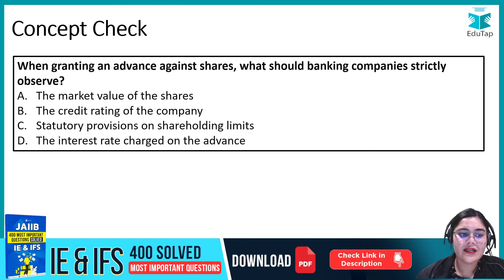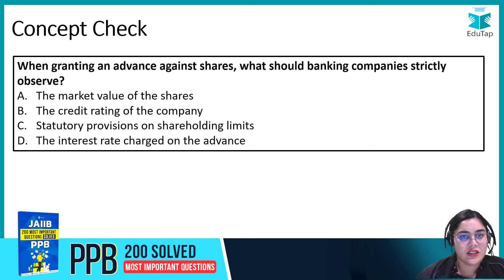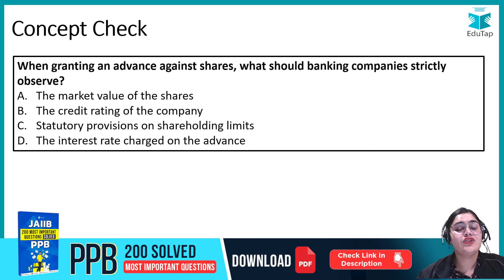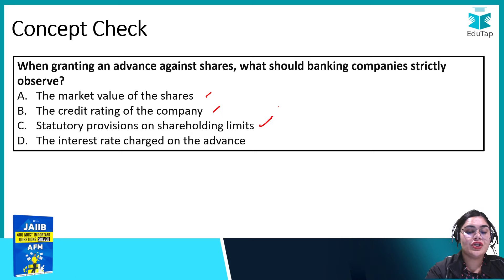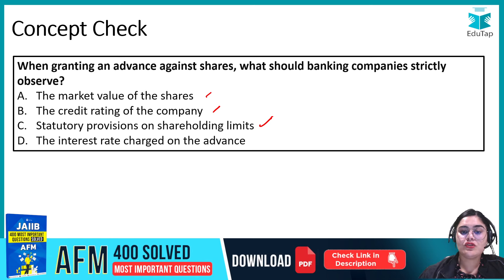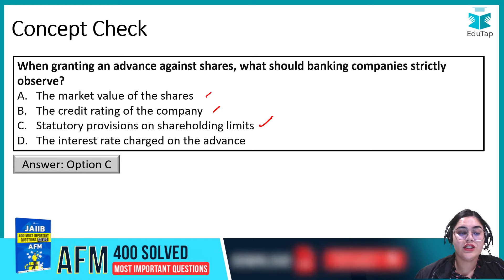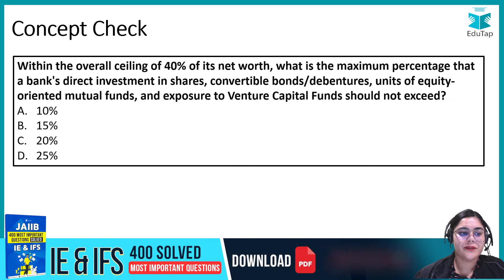Now let's do some MCQs. When granting an advance against shares, what should banking companies strictly observe? The options are: Market Value, Credit Rating, Statutory Provisions on Shareholding Limits, or Interest Rate Charged. The correct answer is C — Statutory Provisions on Shareholding Limits, which must be strictly followed.